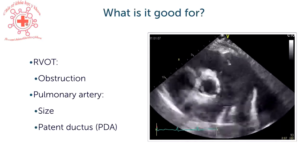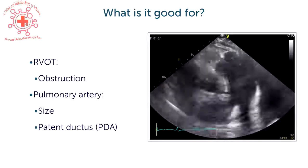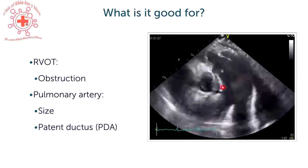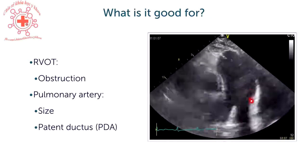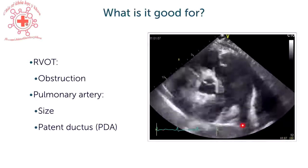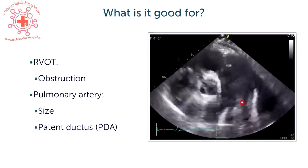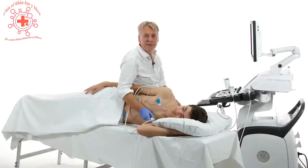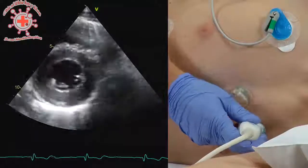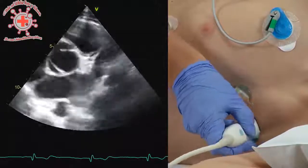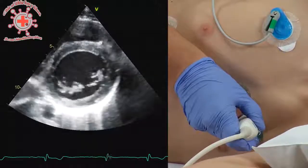You can look at the right ventricular outflow tract to detect obstruction, and also to assess the size of the pulmonic artery. Here's a beautiful example of a patient with a very wide pulmonic artery. Right down here would be the region where you would expect a patent ductus arteriosus, so this view is equally important to detect this form of congenital heart disease. Now let's move on to another short axis view — the short axis view at the level of the mitral valve.